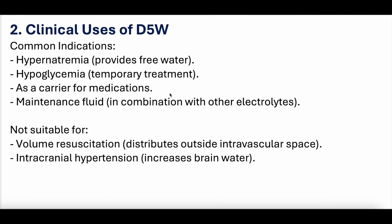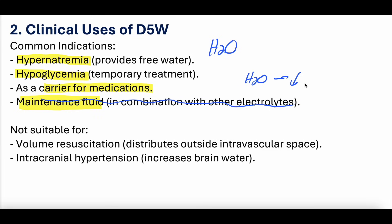What are the clinical uses then? Hypernatremia — high sodium. D5W is great here because you're giving free water to dilute out that sodium. Hypoglycemia — D5W has 5% dextrose, so it can help with low blood sugar. Lots of medications use D5W as a carrier. Some people use it as a maintenance fluid because it contains a little bit of glucose, though we're not huge fans of this because at the end of the day it's essentially free water and will lower sodium over time.